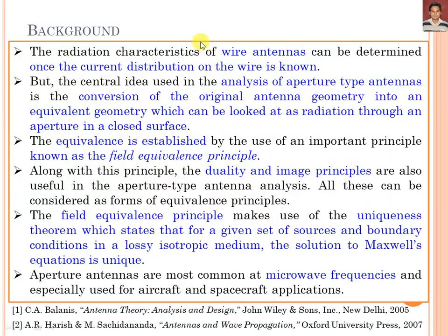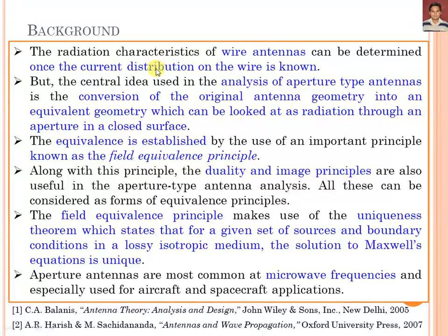The radiation characteristics of wire antennas can be determined once the current distribution on the wire is known — this is the basic phenomenon used in the case of wire antennas. If the current distribution on the wire is known, we can calculate the field radiated by the wire antenna. But in the case of aperture antennas, we cannot calculate the radiated field using the current distribution approach, because it depends on the aperture of the antenna structure.